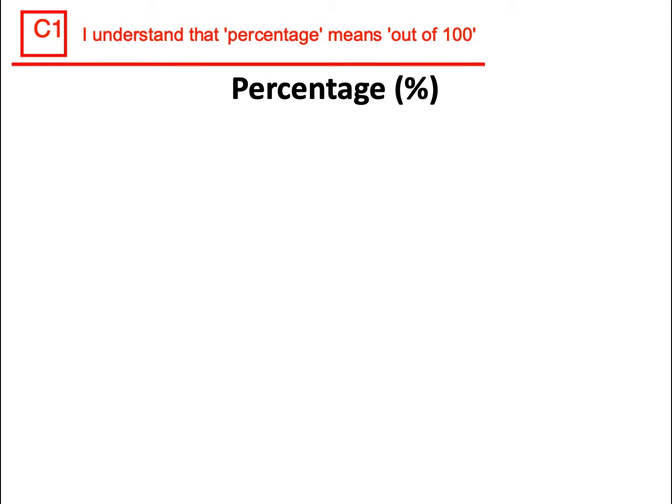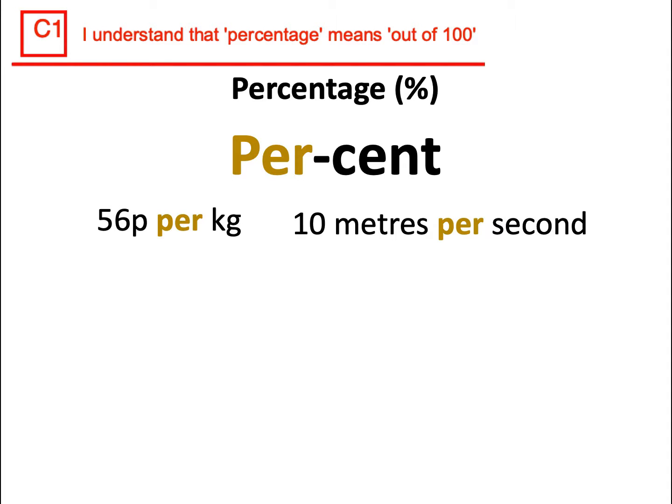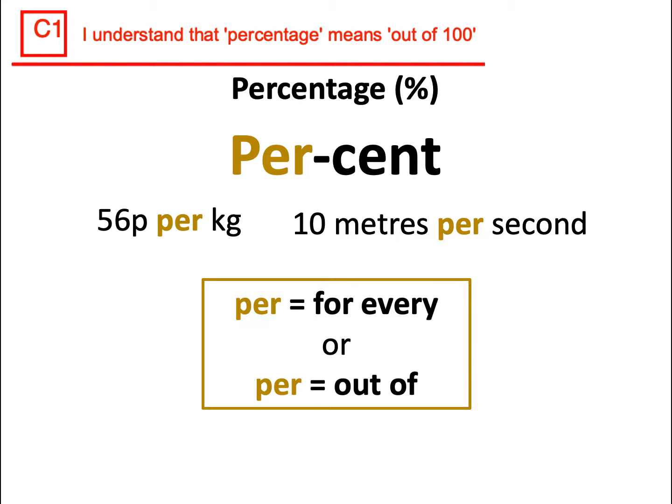What is a percentage? Let's start by looking at the word percent. Per cent. Where do we use this word per? You might see it when buying food: it could say 56 pence per kilogram, or a car was traveling at 10 meters per second. So per is the same as saying for every or out of.